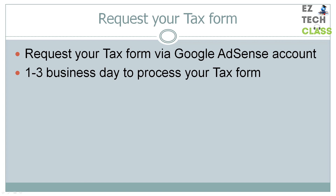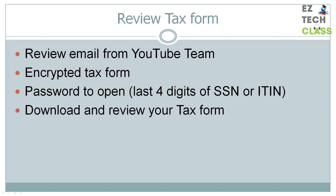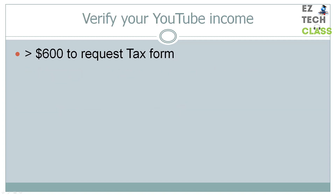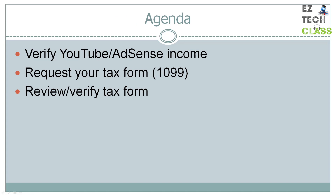For me, it was less than one day — I sent it the night before and early the next morning I received the tax form, so about 8 to 10 hours. But it depends on your account, case by case. When the request has been processed, the YouTube team will send you an email with the tax form inside. That tax form is encrypted with a password, and you'll type in your last four digits of your social security number or the ITIN to open it. Once you open it, you can download and review the tax form. If you find any mistake or incorrect number, contact the YouTube team so they can correct it and send you a new form. Now I'm going to switch to my YouTube account and Google AdSense account to show you this in action.